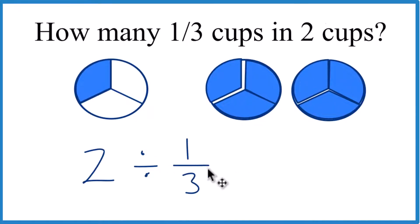And to do that, the easiest way is to take the reciprocal of one-third. Move the three up top, one to the bottom. So three over one, that's the reciprocal for one-third.